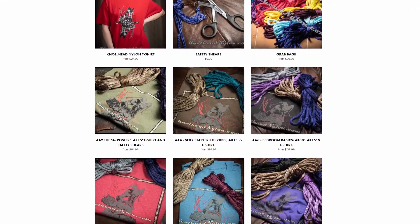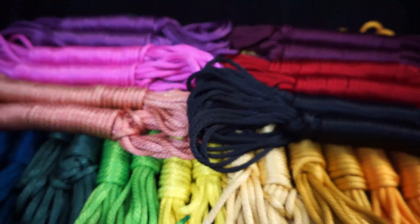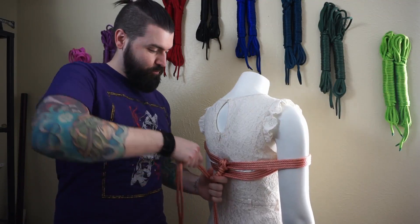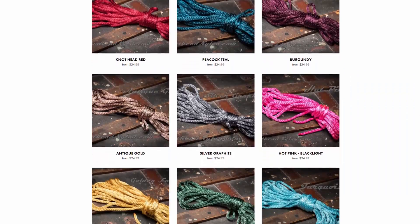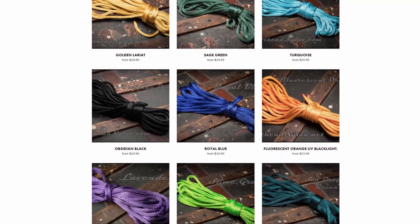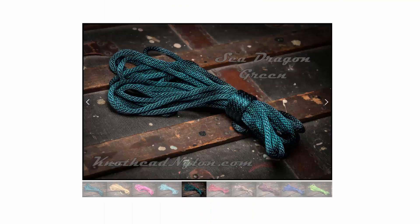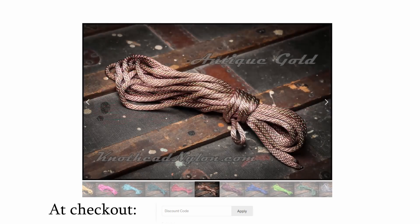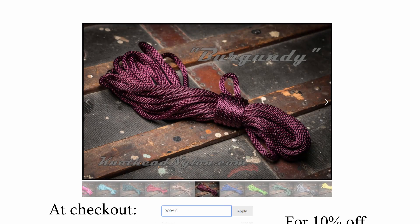Let us proceed. But first, we must thank my sponsor for today, Knothead Nylon. Knothead Nylon is the destination for all your premium nylon rope bondage needs. Easy to clean, water-resistant, up to 1,100 pounds of weight load, and in a wide array of beautiful, vibrant colors, Knothead Nylon will slake your rope desires. At checkout, put in discount code Rory10 for 10% off.